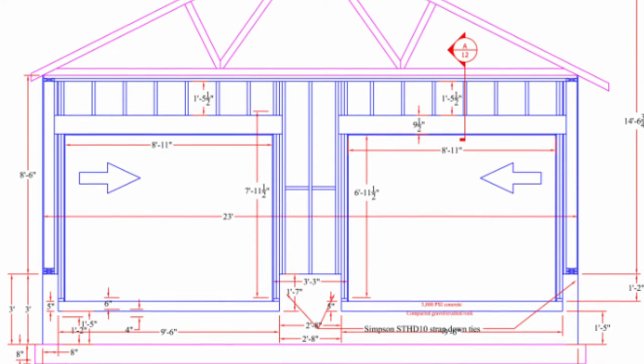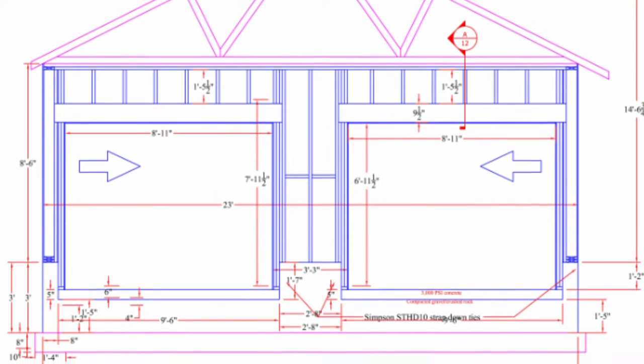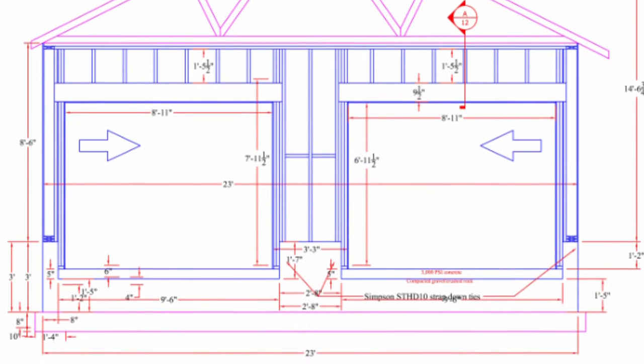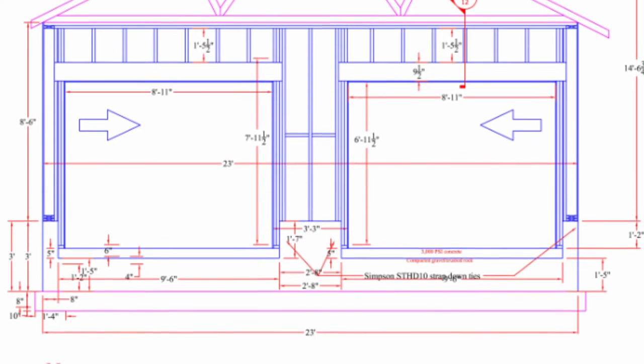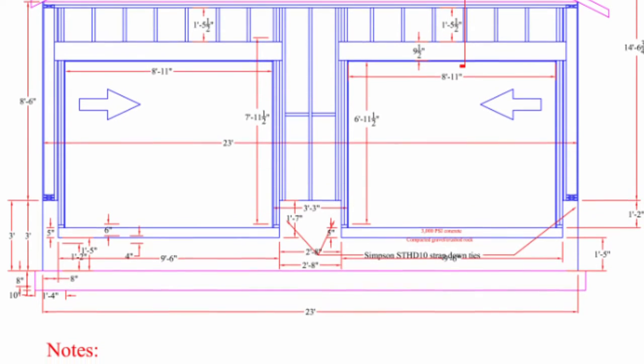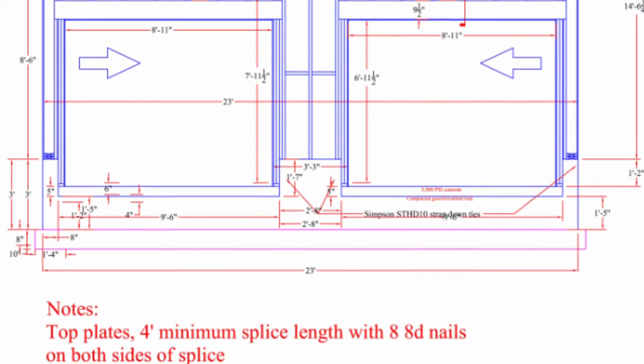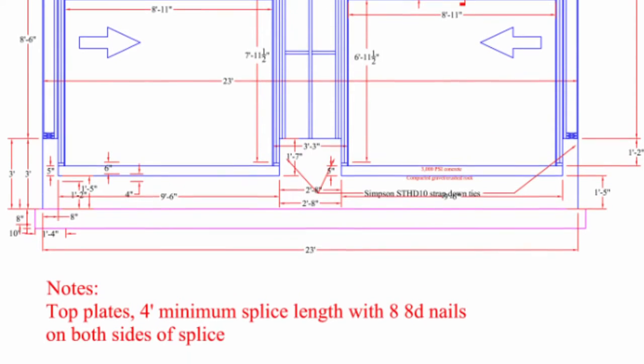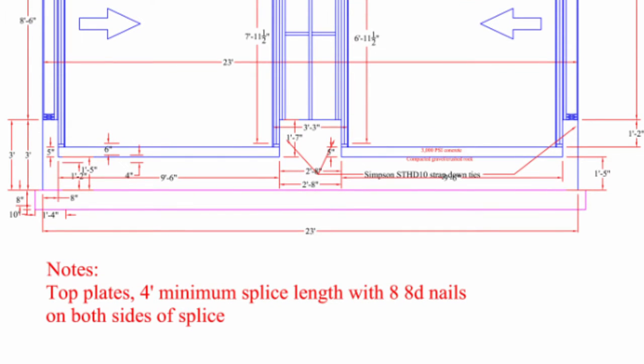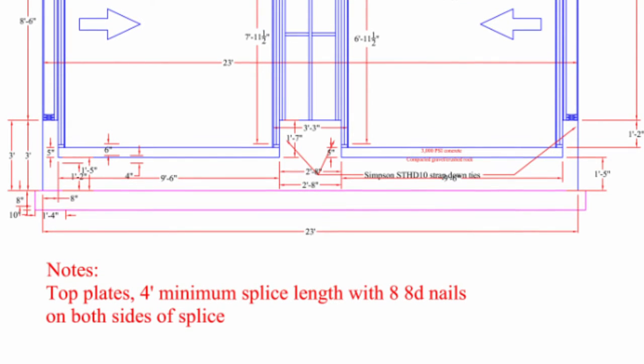You can see the headers, the studs and then of course pressure treated lumber that will be up against the concrete. You can see the strap down ties will be in the corners there. Anytime you have a break in the top plate you need to splice it with another top plate with a minimum of an 8 foot long piece. So 4 feet on each side of the splice and then 8 8D nails on both sides of the splice.